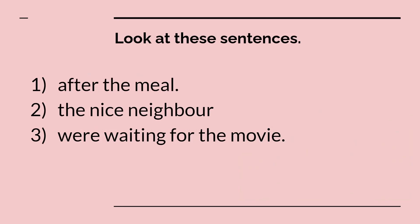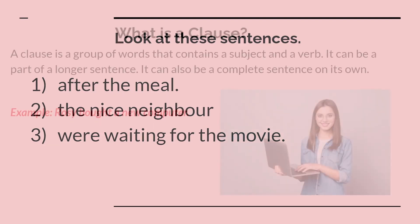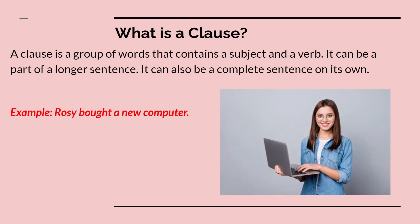Let's see some more phrases: 'after the meal,' 'the nice neighbor,' 'were waiting for the movie.' In these examples there are no subjects — they are incomplete. So a phrase can be short or long, but it does not include a subject-verb pairing. A phrase does not contain a subject completing an action. Please note that a phrase will always be more than one word.